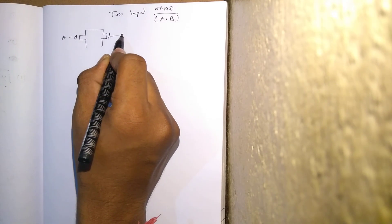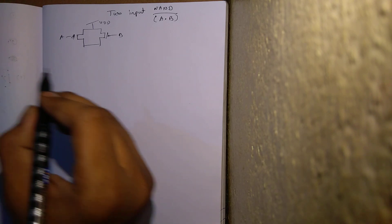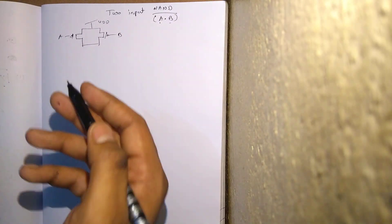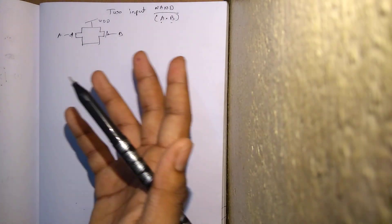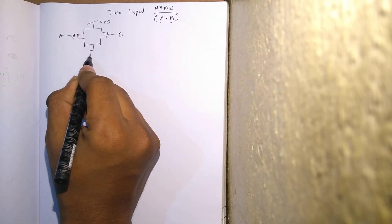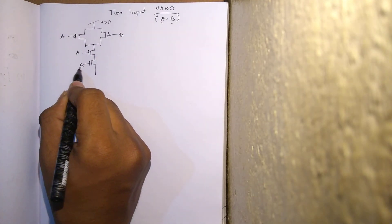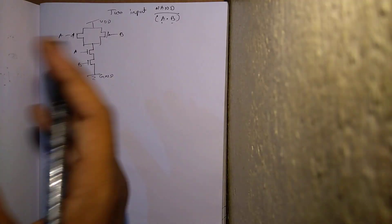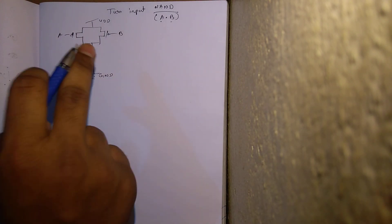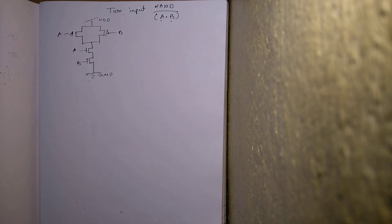Both PMOS transistors are in parallel here, connected to VDD. And A dot B in the pull-down network: for NMOS transistors, dot indicates series. So this is your A and B in series, connected to ground. We are now done with the second step — the static CMOS circuit diagram.